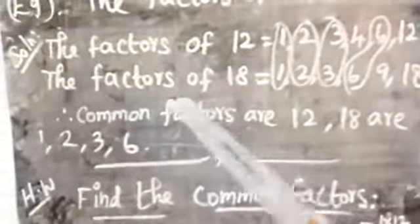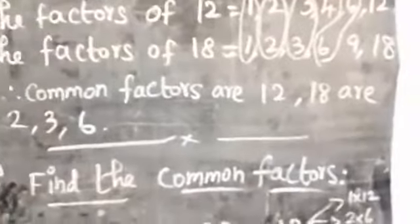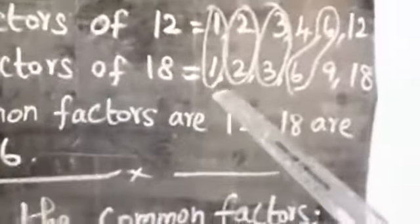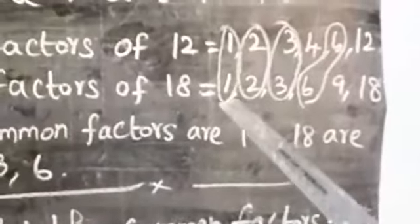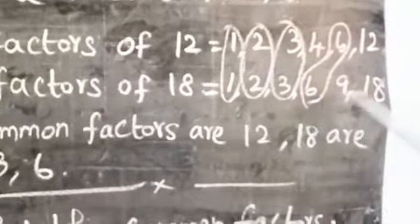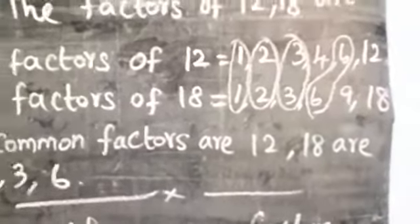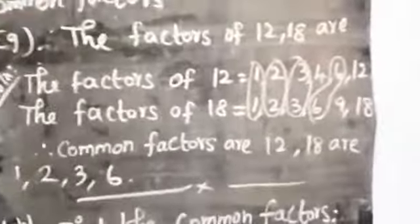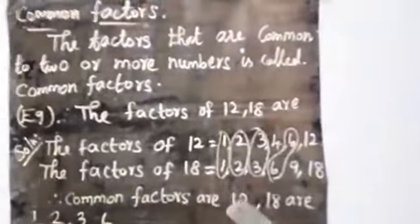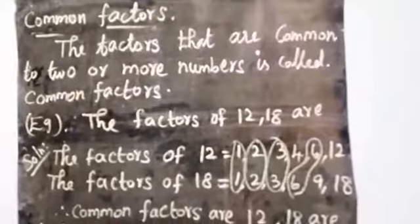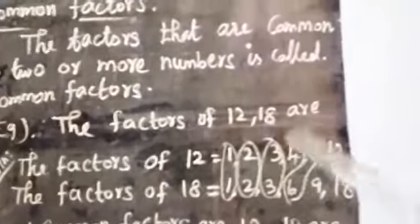Likewise, write the factors of 18. The factors of 18 are equal to: one, two, three, six, nine, eighteen.